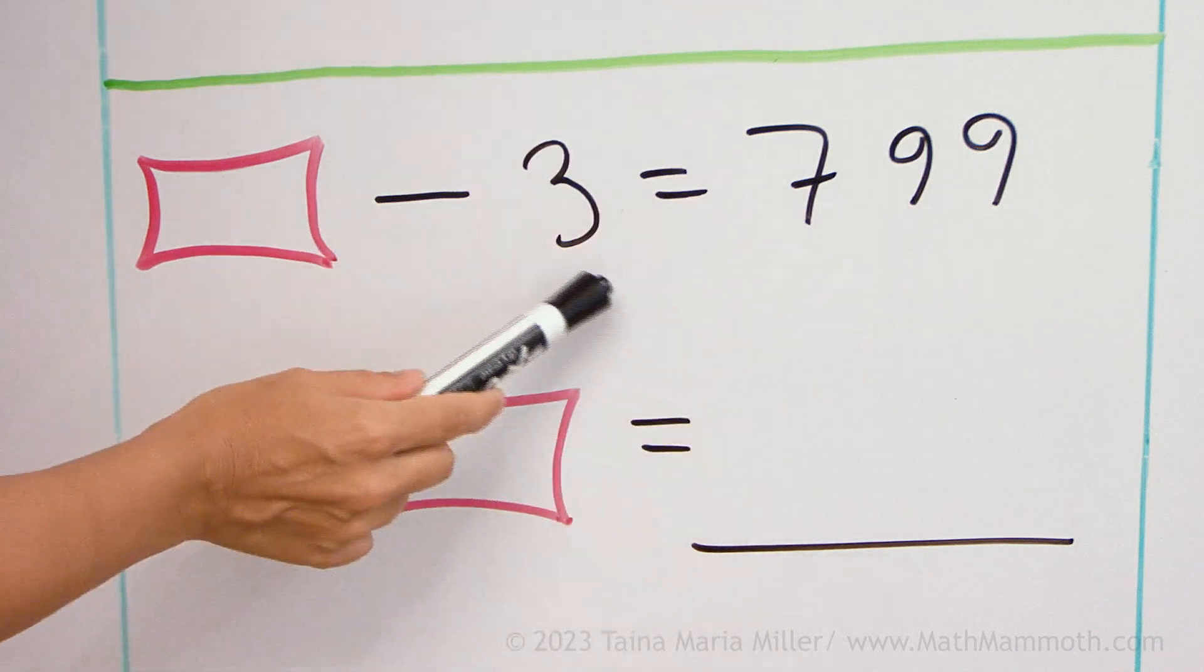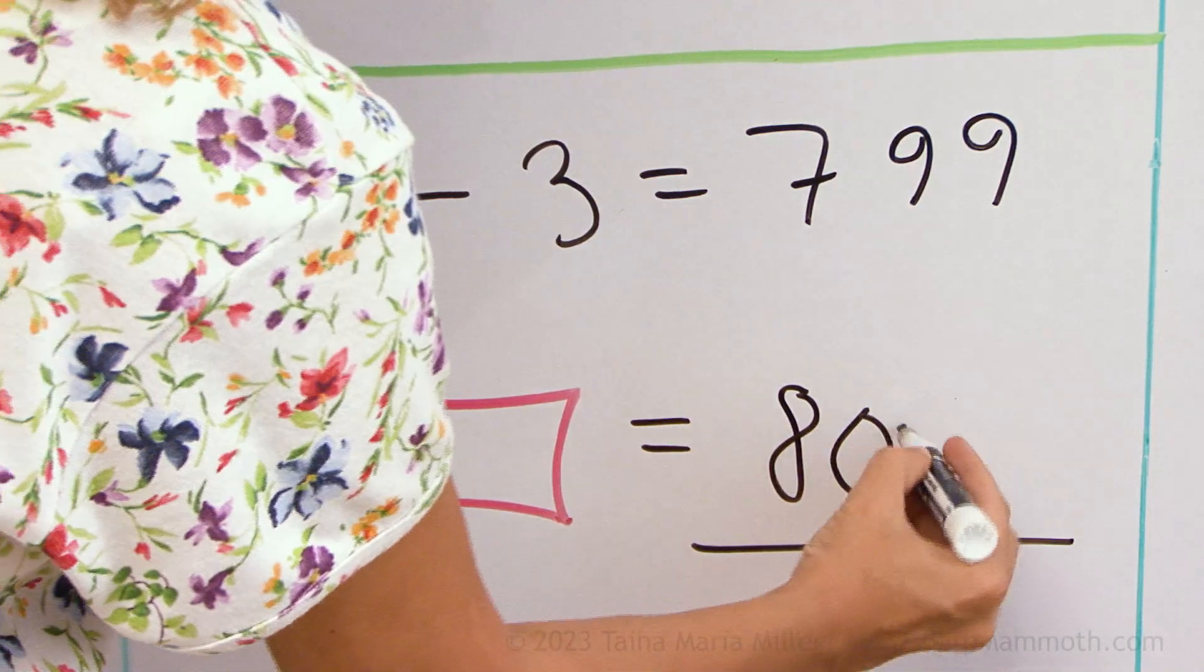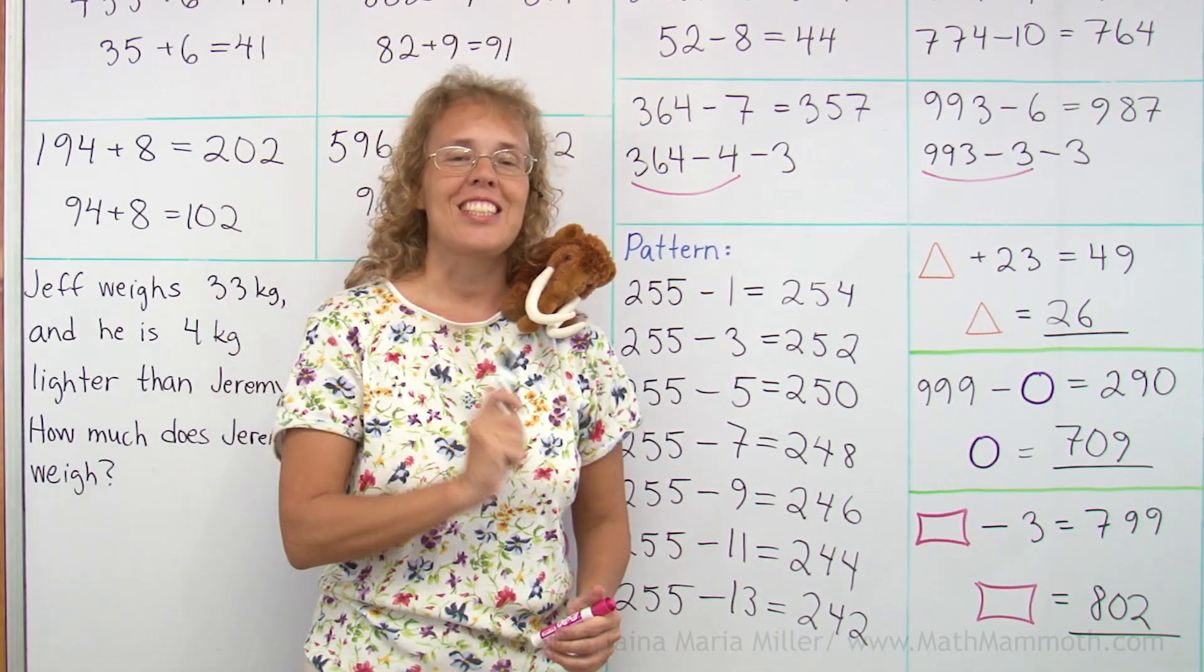So you take this and add 3. So 802. Yep, perfect. Alright, good job. We're all done with this lesson.